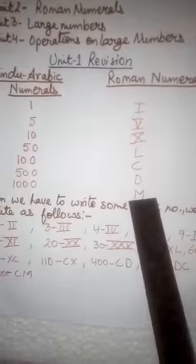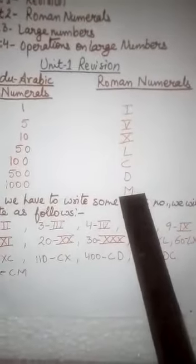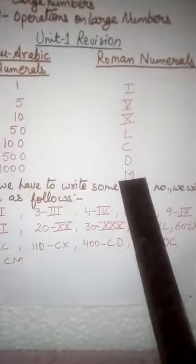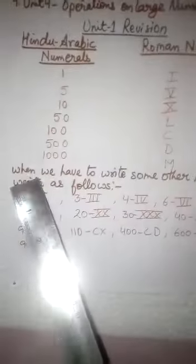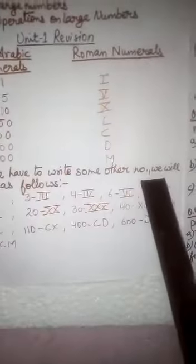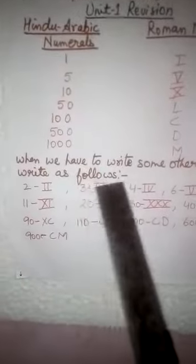These are the main symbols and we use these only to write the whole counting. When we have to write some other number, we will write as follows.